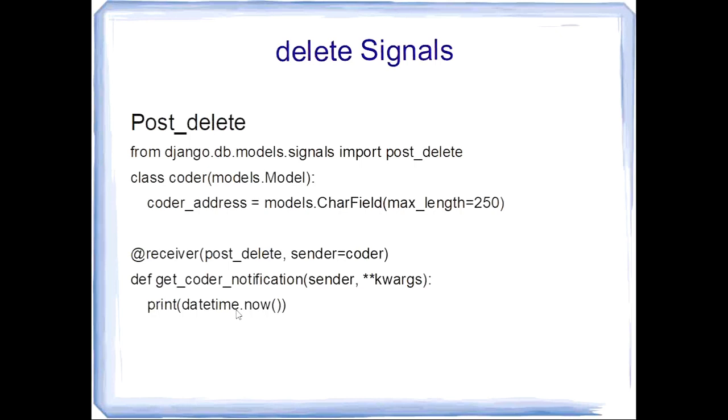In post-delete, the signal is sent after each instance is removed. So instead of pre-delete, now there is post-delete. Now you can understand that the signal is based on the type of request sent by the client and server. We will see all these types of signals through coding implementation along with one application in my next video. Hope you understand each and every type of signal.